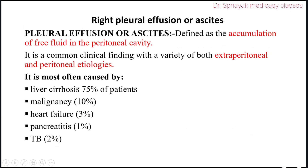In this case, ascites is most often caused by liver cirrhosis in 75% of patients, malignancy in 10% of patients, heart failure in 3% of patients, peritonitis in 1% of patients, and TB in 2% of patients.